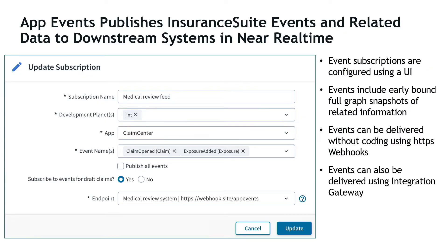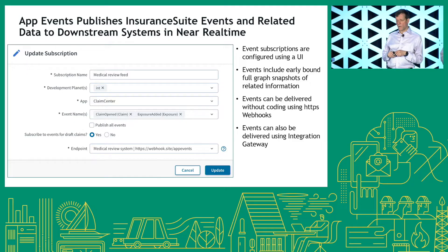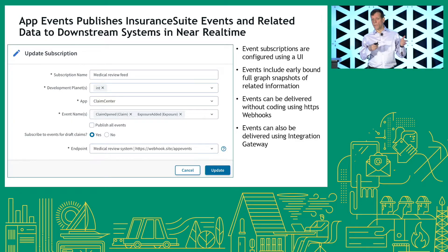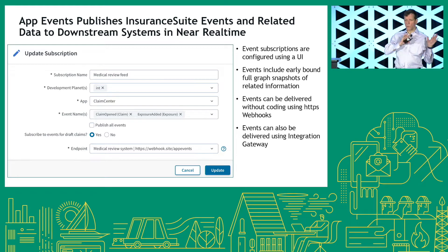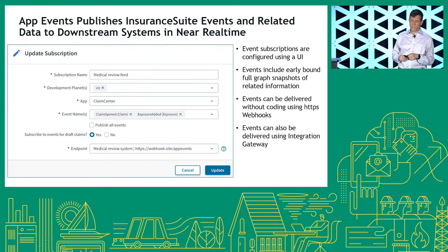App events publishes InsuranceSuite events and related claim or policy information to the downstream system in near real time. The event could be something like a claim opened or a submission-related event. The related data is a snapshot of the entire claim, or a snapshot of the policy or account. We want to publish this in near real time, and we have two delivery mechanisms for different use cases.